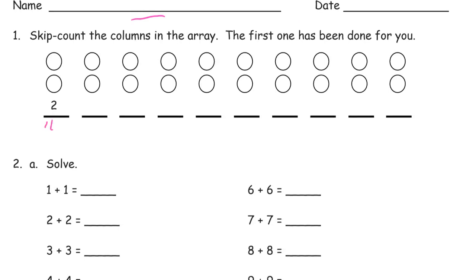So starting right here, that's the first one that's been done for you. So 2, 4, 6, 8, 10, 12, 14, 16, 18, 20.